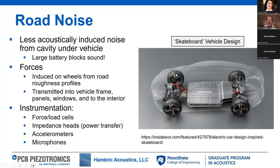Road noise really boils down to the forces induced on the wheels from the road — there are different roughness profiles you can estimate. For measurements, you're looking at force and load cells, preferably somewhere in the transmission path as close to the source as possible. Many people are interested in power transfer methods like SEA, where you need to know how much power is being transferred in — you can measure that directly with impedance heads, which give you both force and fluctuating velocity. The usual suspects — accelerometers and microphones — are still useful, particularly with multi-sensor coherent power processing.